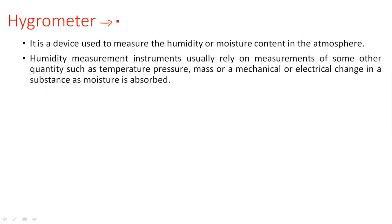Humidity measurement instruments usually rely on measurements of some other quantity such as temperature, pressure, mass, or mechanical or electrical change in a substance as moisture is absorbed. Like in the measurement of force, displacement, and proximity, a change in a physical parameter affects an electrical parameter like resistance, capacitance, or inductance, which gives a change in voltage or current.